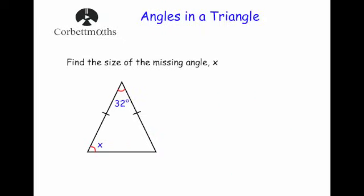Our last example says find the size of the missing angle X. It's another isosceles triangle, but this time we've been given the angle at the top, which is 32 degrees. The two base angles — X and the other one — are the same. So I'm going to take 32 away from 180, which tells me how many degrees are left for both base angles. Then because they're equal, I can halve that answer to find X.